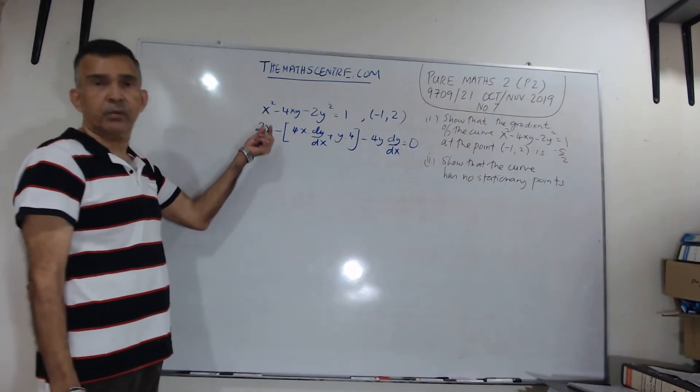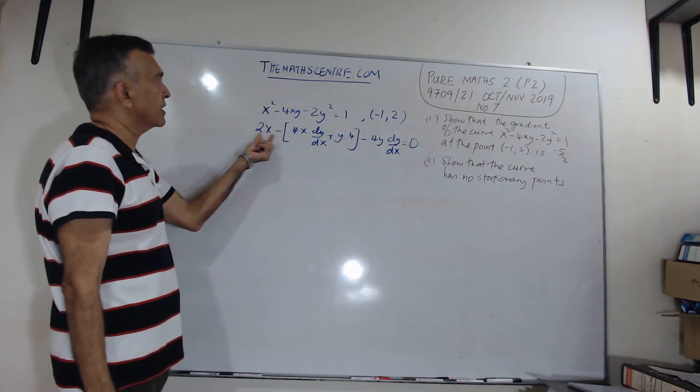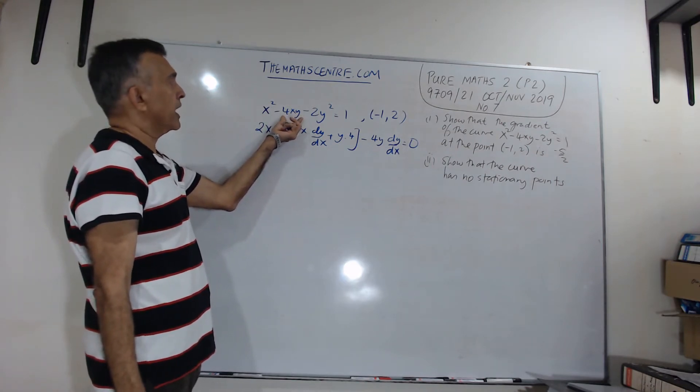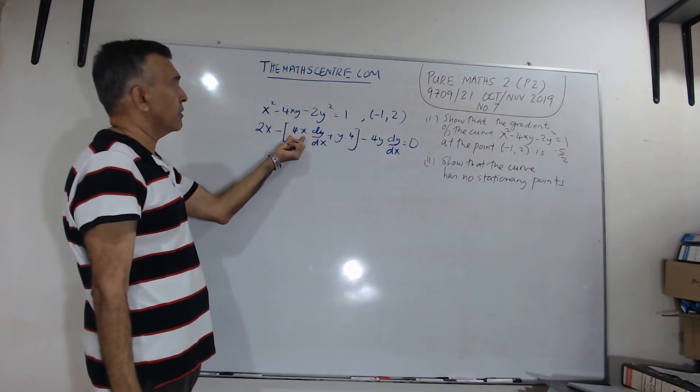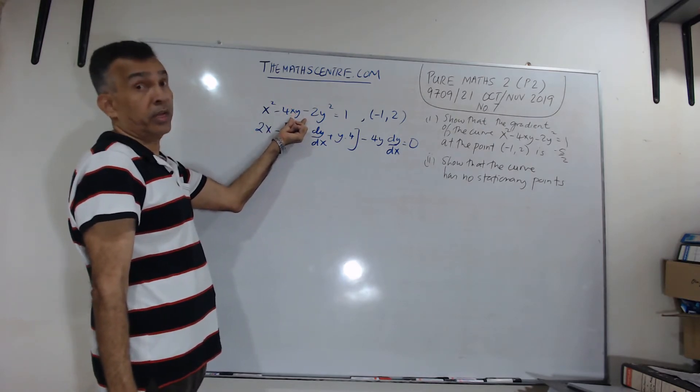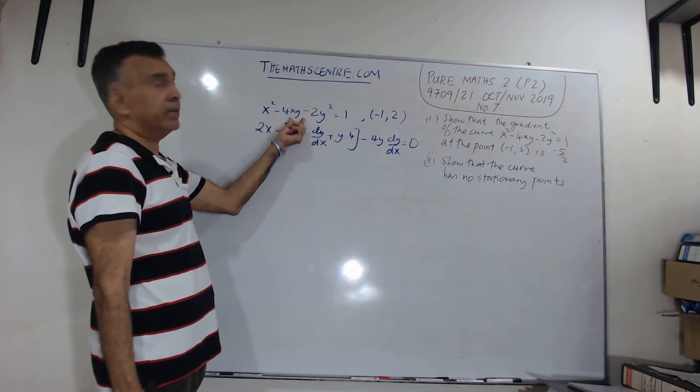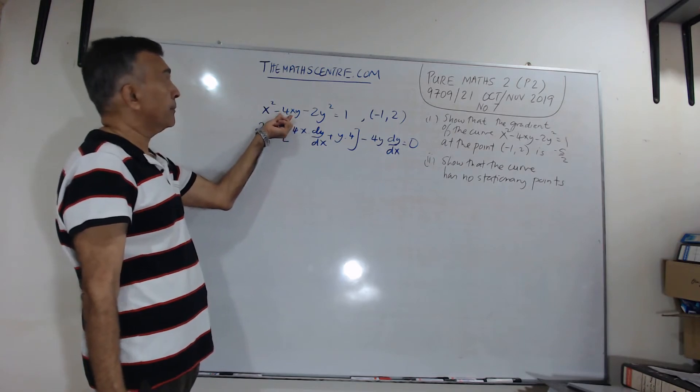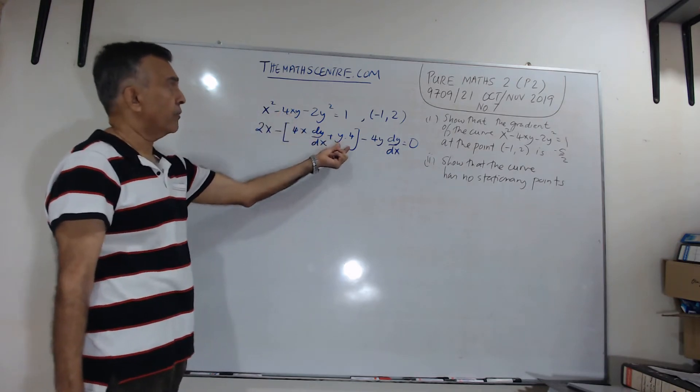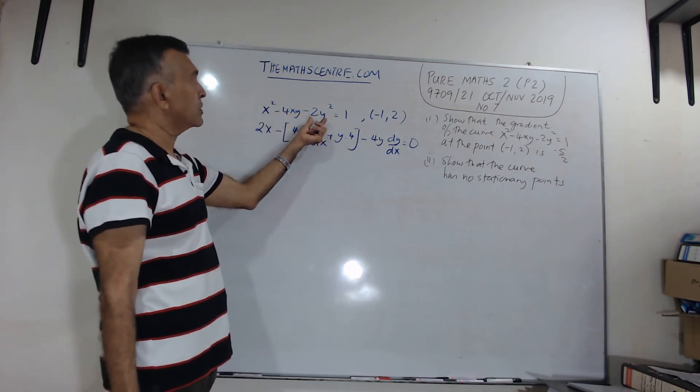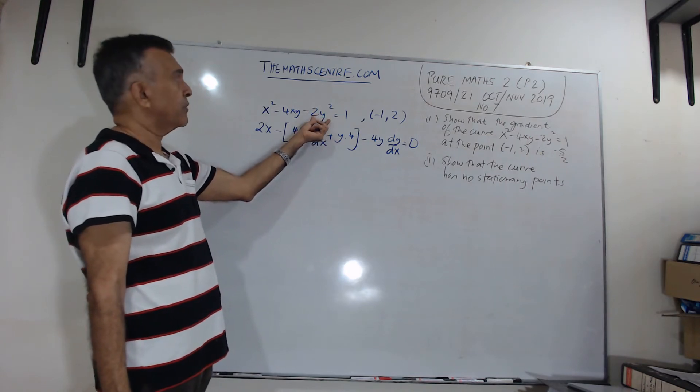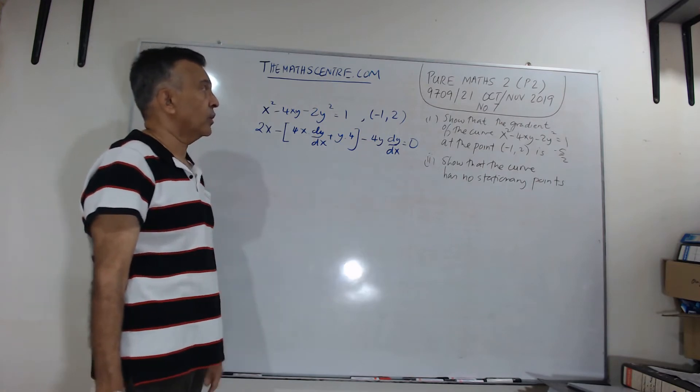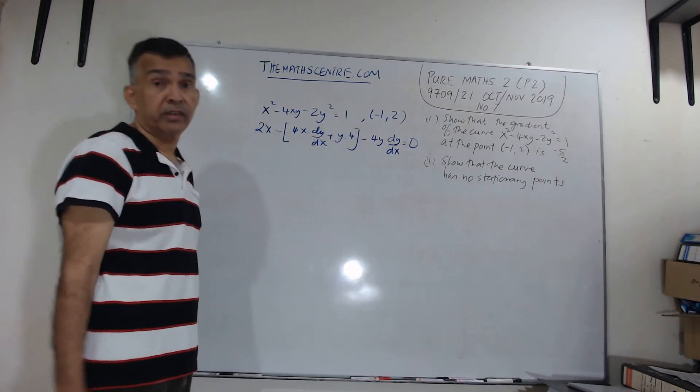So, again, a quick check. Differentiate x², you get 2x. And then, I'm going to use the UV rule on 4xy. I'm using u = 4x. So, I'm going to write 4x down. Differentiate y, you get 1, but I'll need to multiply by dy/dx. Plus, write down y, and then I will differentiate 4x, I'll get 4. Good. And then, I have -2y² here. When I differentiate this, I'll get -4y dy/dx. All looks good. The 1 here, when you take the derivative, it is 0.